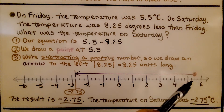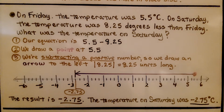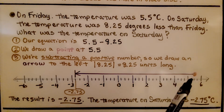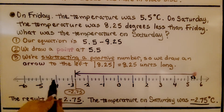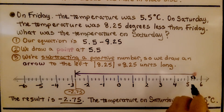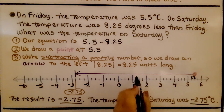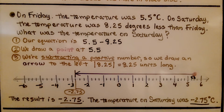We draw a point at 5.5, which is in between 5 and 6. We're subtracting a positive number, so we draw an arrow to the left. The absolute value of 8 and 25 hundredths is 8 and 25 hundredths units long. We can go from our starting point, take 25 hundredths — one increment — then take away 8. Going 8 units to the left: 1, 2, 3, 4, 5, 6, 7, 8 — that puts us right before negative 3 at negative 2 and 75 hundredths. The result is negative 2.75, so the temperature on Saturday was negative 2 and 75 hundredths degrees Celsius.